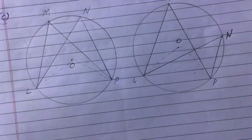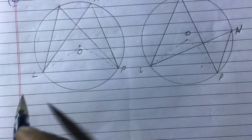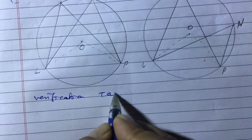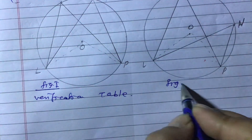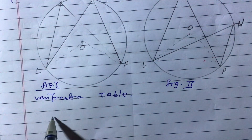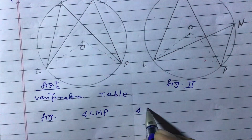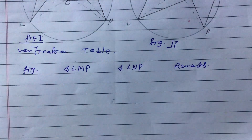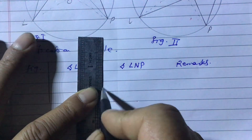Now we will measure the angles and verify. We need to find the relationship between LMP and LNP. For this we draw a verification table — figure one and figure two. The table has columns: angle LMP measurement, angle LNP measurement, and remarks.